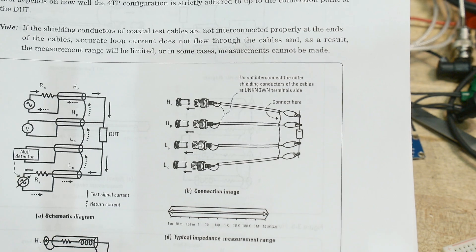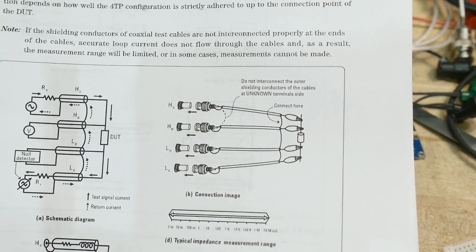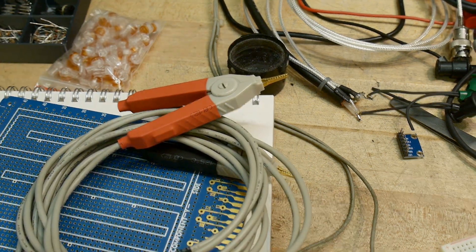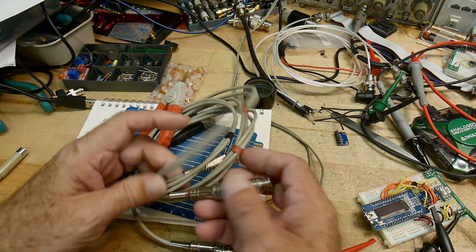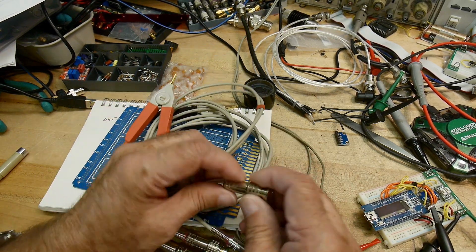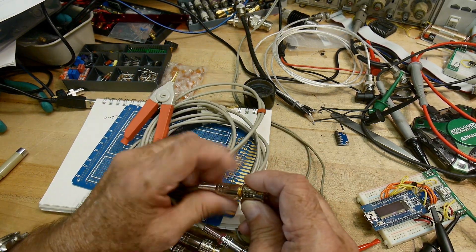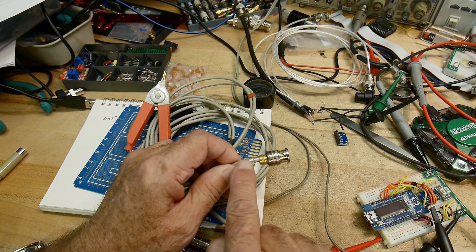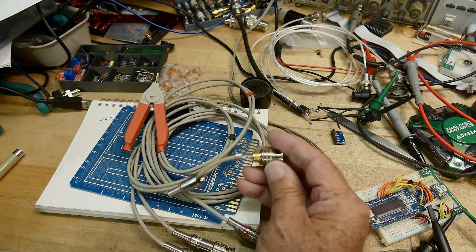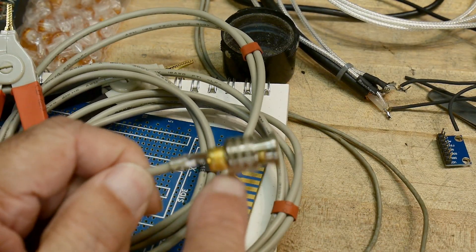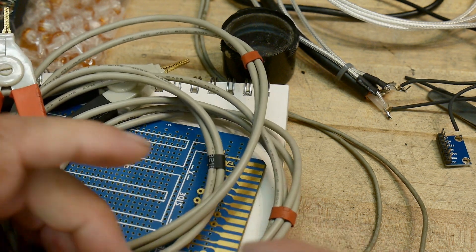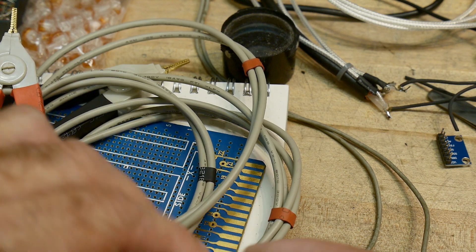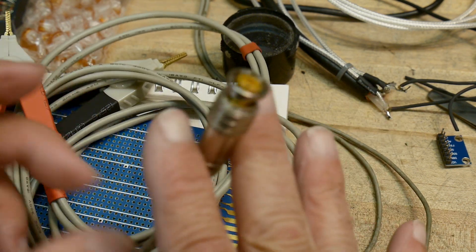So here's the cable that I purchased. And it has BNCs. Let me open one up here. So it has a shield. The shield is soldered to the connector. And then the center conductor is connected to the center conductor. So that's really good. That means that this is just a regular BNC connection, shielded BNC connection.